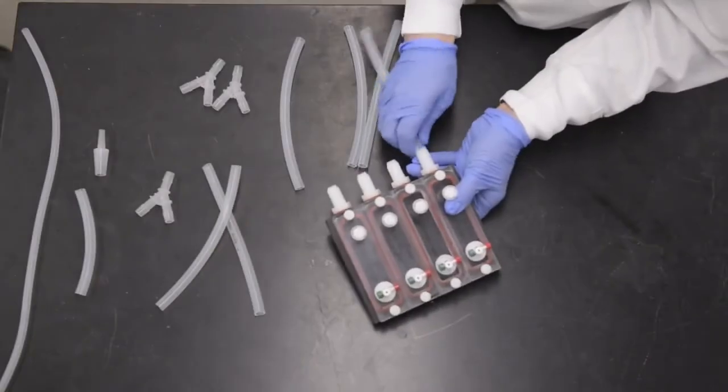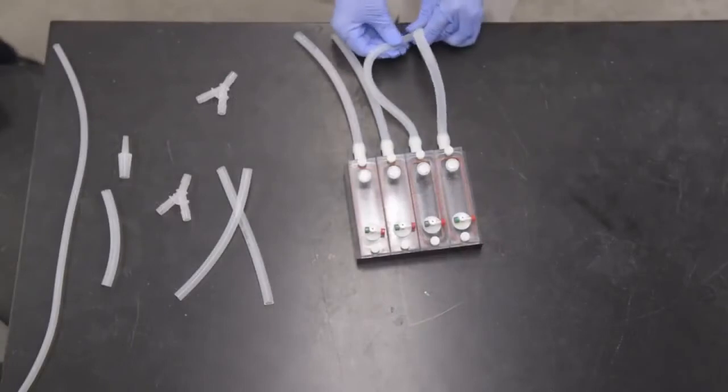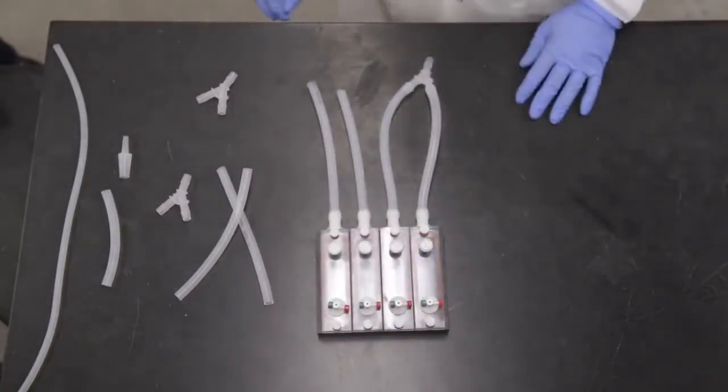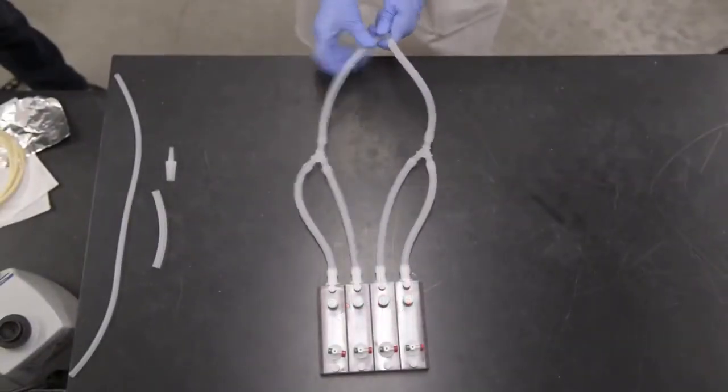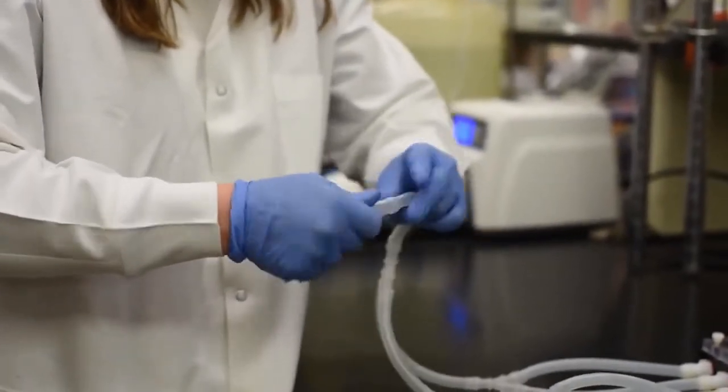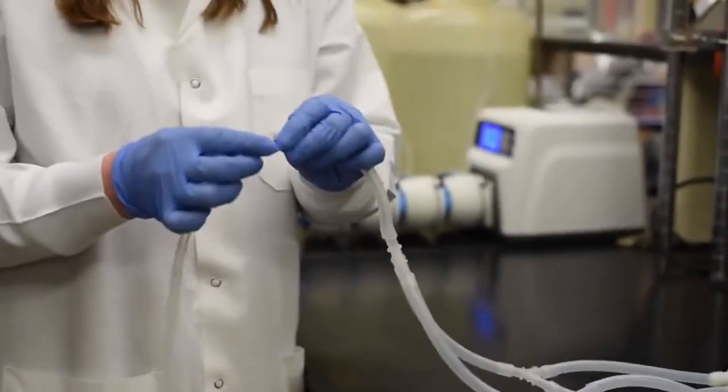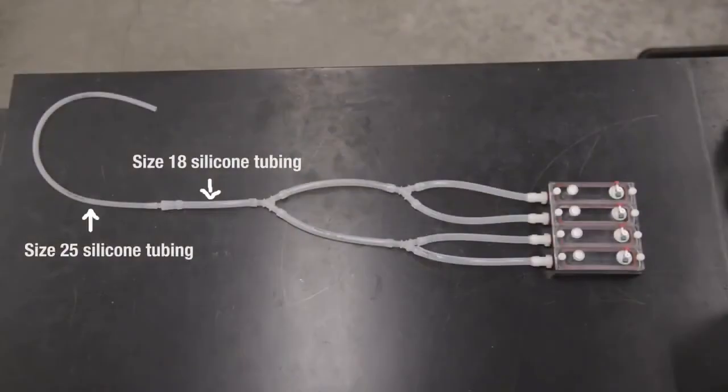Attach a short length of size 18 silicone tubing to each of the four effluent fittings. Splice the four effluent tubes down to two with two size 18 barbed Y connectors. Splice these two effluent tubes down to one with another Y connector. Add a short length of size 18 silicone tubing to the bottom of the Y connector, followed by a reducing barbed connector and size 25 silicone tubing of sufficient length to reach the waste carboy held in secondary containment on the floor.